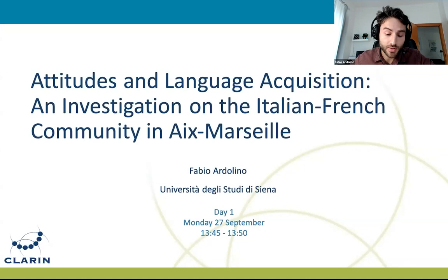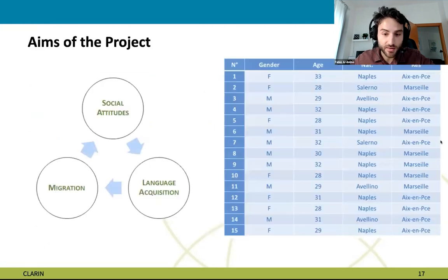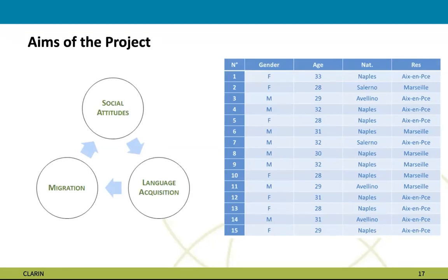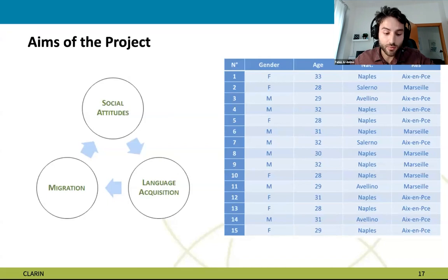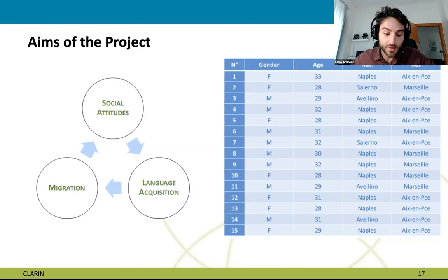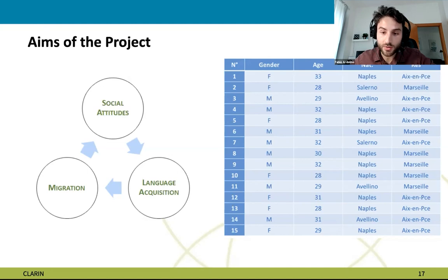Thank you for the introduction. I briefly present my PhD project: 'Attitudes and Language Acquisition: An Investigation on the Italian-French Community in Aix-Marseille,' developed in co-supervision between the Universities of Pisa and Aix-Marseille. The aim is to explore the influence of psychosocial constructs known as social attitudes on the spontaneous development of a second language in a migrant community. The hypothesis is that better attitudes toward the host community and negative attitudes toward the L1 community lead to more native-like development of the L2. The study tests this on a sample of 15 bilingual Italian native informants who migrated to the Provence area in their early adulthood.